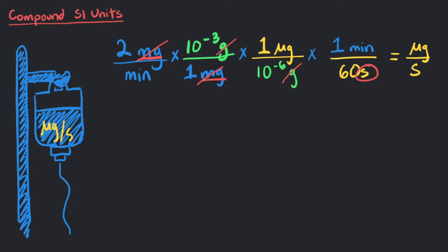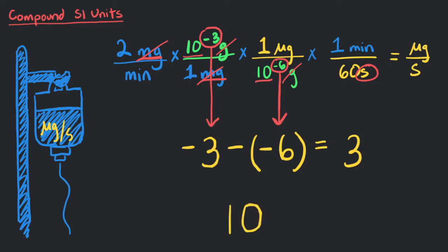If we want to solve this without a calculator, we can look at all the exponents with a base of 10 first. There is 10 to the negative 3 on top and 10 to the negative 6 on the bottom. To solve this, we can subtract the top exponent by the bottom exponent. In this case, negative 3 minus negative 6 is 3. So the base is still 10 with an exponent of 3.